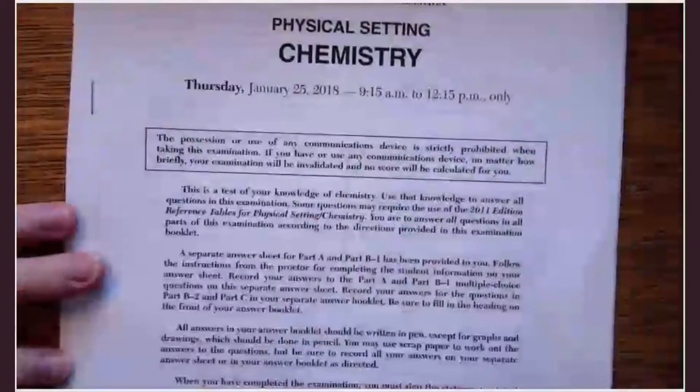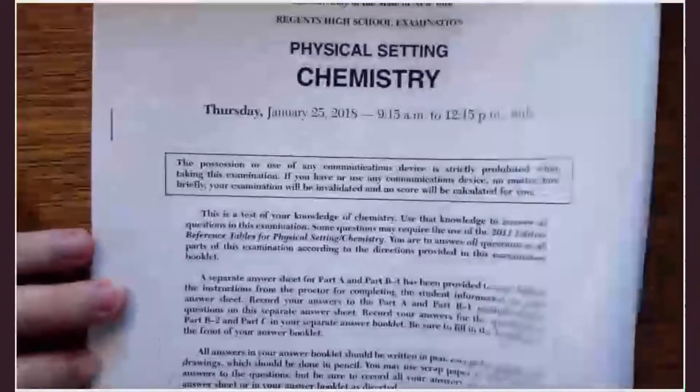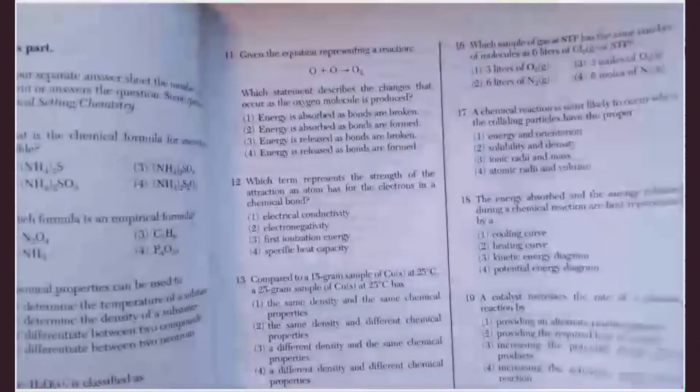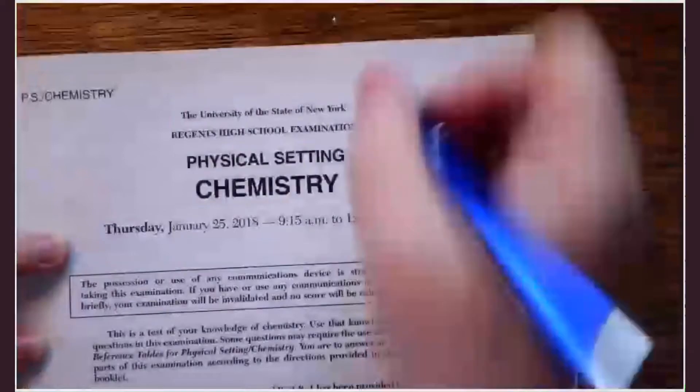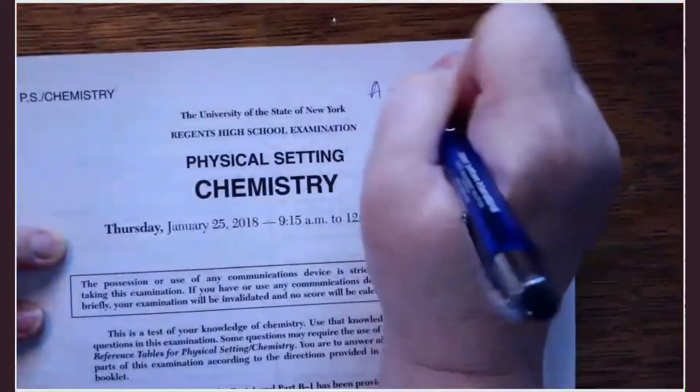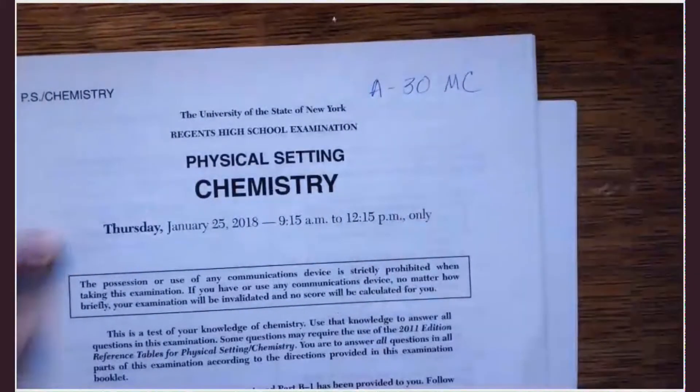So what are the actual exam sections? Well, here are the directions at first. Then we have part A. And part A is going to be a whole bunch of multiple choice questions. So I go through how many? 30. So part A is 30 multiple choice questions.